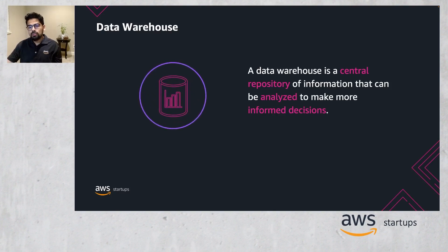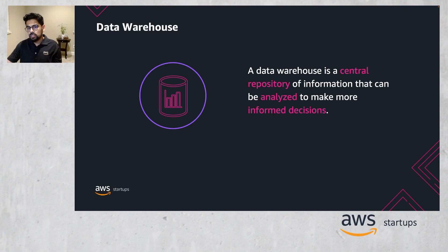Before we dive into Amazon Redshift, let's take a look at data warehouse. A data warehouse is a central repository of information that can be analyzed to make more informed decisions. Data flows into a data warehouse from transactional systems, relational databases, and other sources, typically on a regular cadence. Business analysts, data engineers, data scientists, and decision makers access the data through BI tools and other analytics applications.